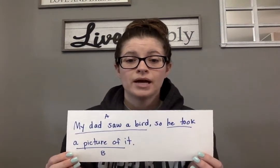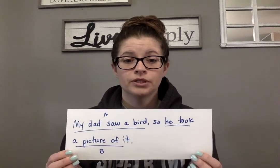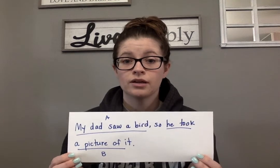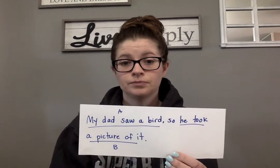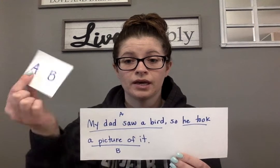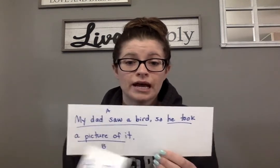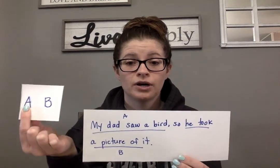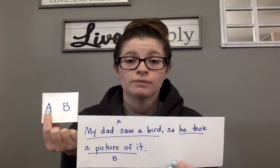Our first sentence is: 'My dad saw a bird so he took a picture of it.' We're looking for the cause, the reason why something happened. [Answer: A] The effect is he took a picture of it — that's what dad actually did. But the reason why he did it was part A: he saw a bird. That's why he took the picture of it — because he saw it.